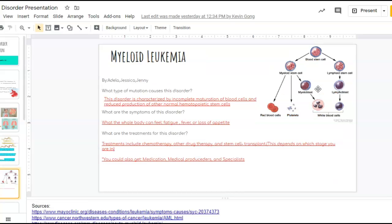Myeloid leukemia was by Adela, Jessica, and Jenny. The red blood cells don't completely develop, and you can feel fatigue and fever. And I'm not sure what type of mutation causes this disorder, but if you have this type of leukemia, it's a type of cancer. So you can have chemotherapy or other stem cell transplants.